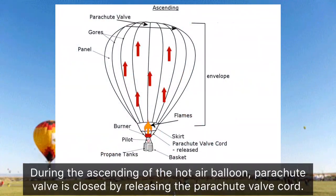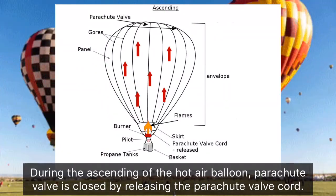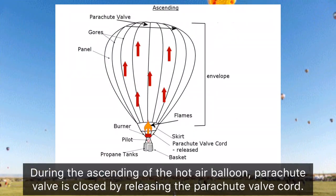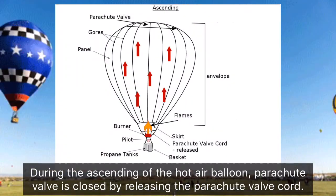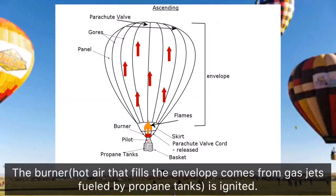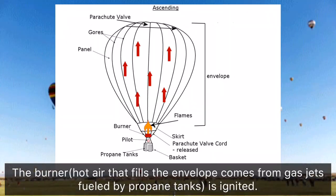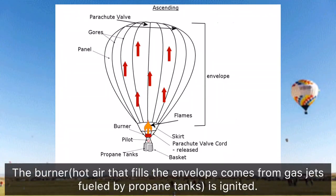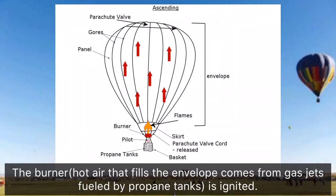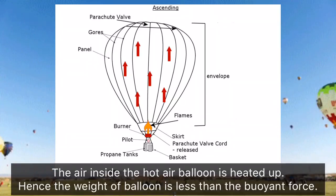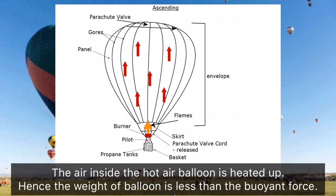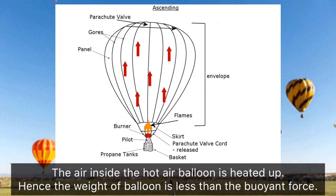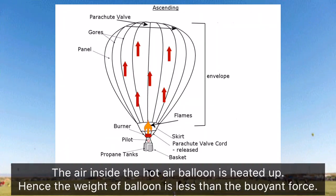During the ascending of the hot air balloon, the parachute valve is closed by releasing the parachute valve cord. The burner is ignited — hot air that fills the envelope comes from gas jets fueled by propane tanks. The air inside the hot air balloon is heated up, and hence the weight of the balloon is less than the buoyant force.